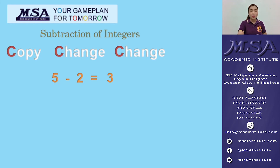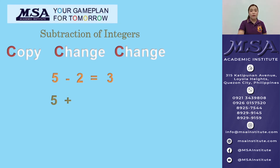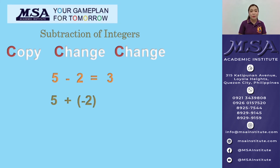Using 5 minus 2: when we say copy, that means you copy the minuend, which is 5. Then change the operation from subtraction to addition. And then change — that means you change the sign of the subtrahend from positive 2 to negative 2. We are now adding two unlike signs. So what is 5 plus negative 2? The answer is 3. So we get the same answer.